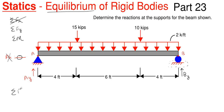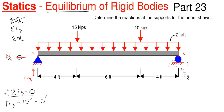Let's start with our vertical portion, F y. We'll take all upward forces as positive and all downward forces as negative; they have to equal zero. Assume a direction for your reactions — if a reaction comes out negative, you assumed the wrong direction but the value is still correct. Since all applied forces are downward, I'll assume my reactions are upward. Working left to right: A sub y is positive (upward assumed), then minus 15 kips, minus 10 kips, then the two kip per foot uniform load also downward.